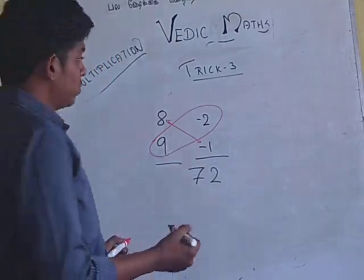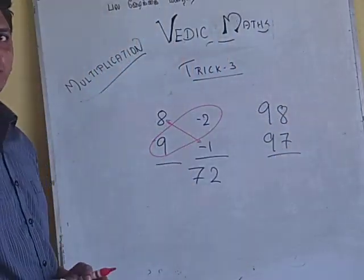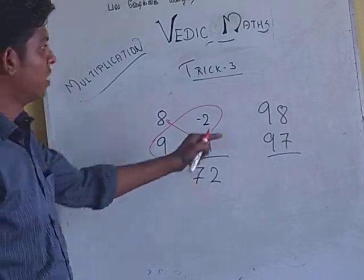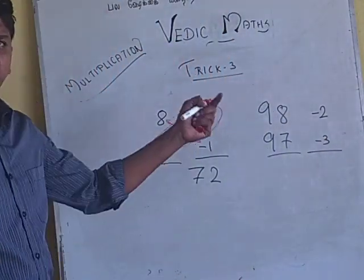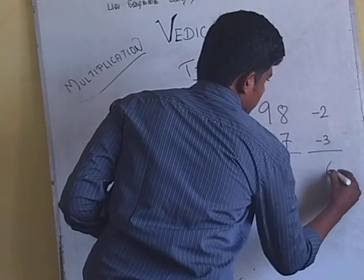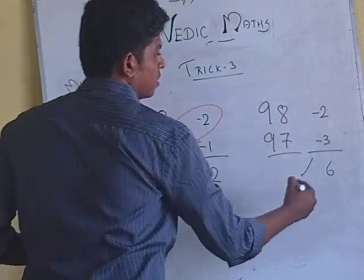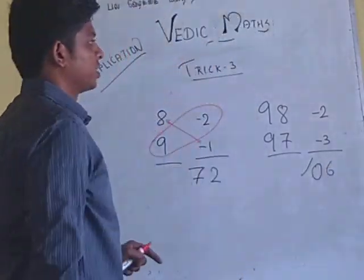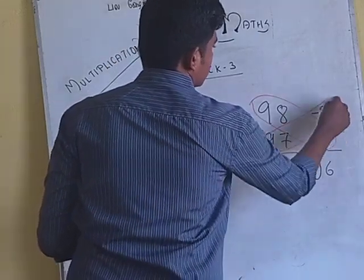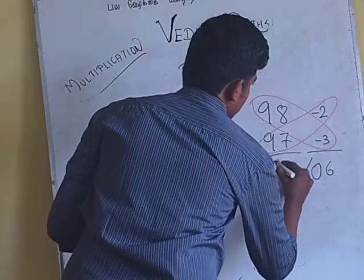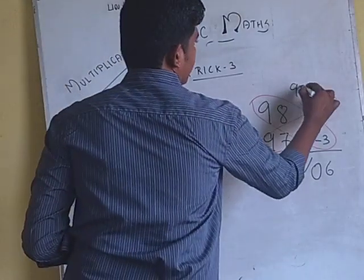For example 98 and 97. 98 and 97 multiplied by 100, 100 will be minus 2 and minus 3. So 2 into 3 is 6. Remember this 100 will be 2 digits so we add a 0 here, 06. Approach either this or this. 97 minus 2 is 95 or 98 minus 3 is 95. Answer is 9506.